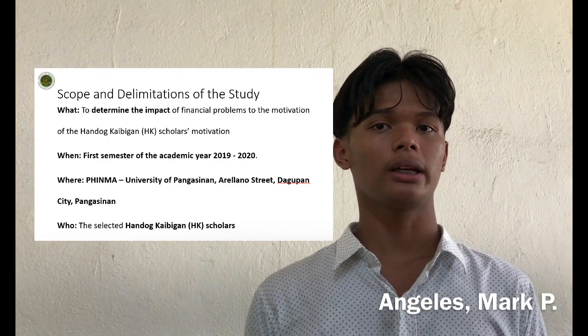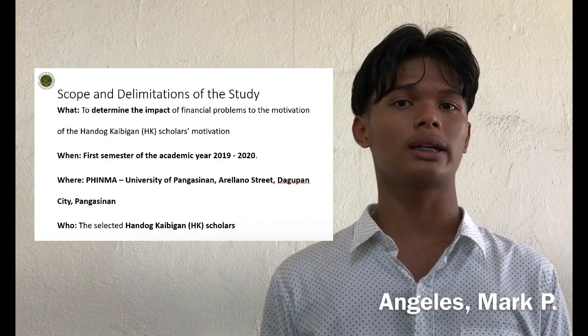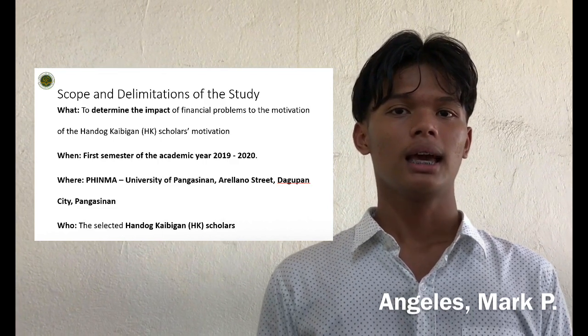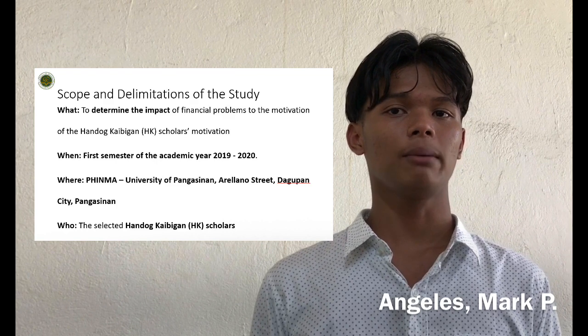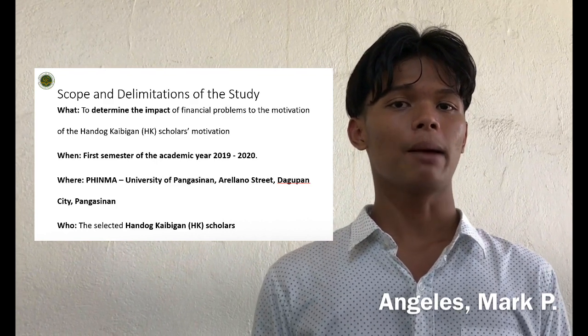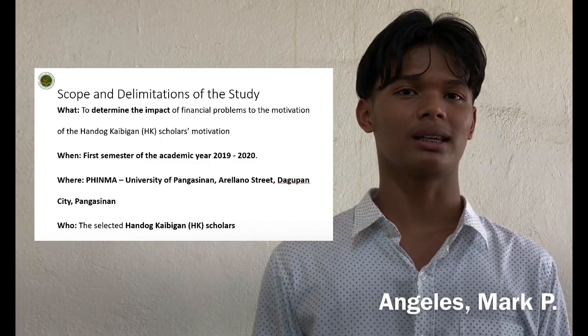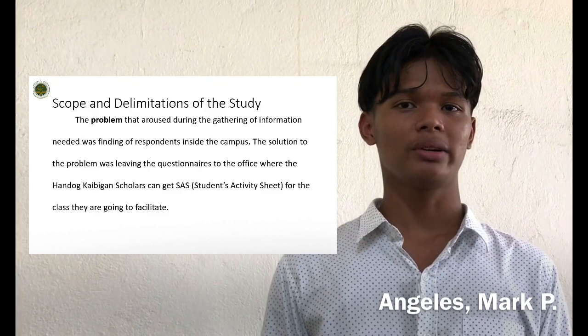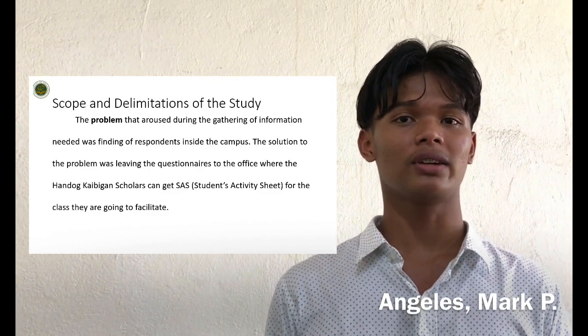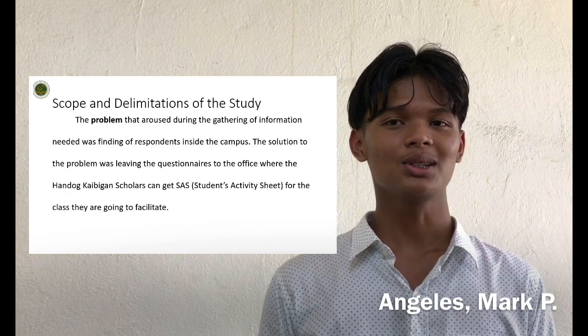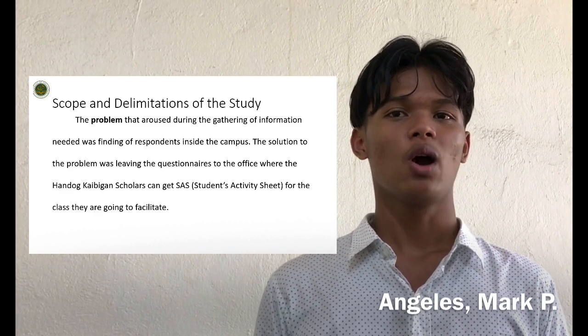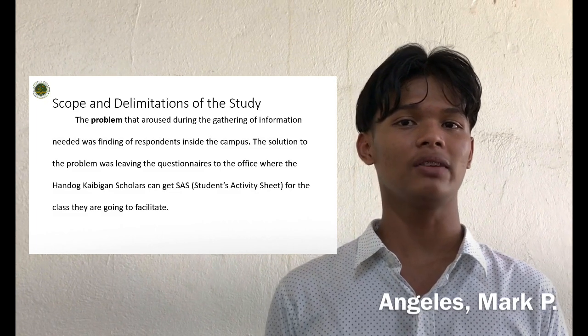The data gathered in the research was obtained from the selected Andolka Ibigan Scholars of FINMA University of Pangasinan. This study was conducted for the first semester of academic year 2019–2020. Random sampling was utilized, and the specific technique used in selecting the respondents was quota sampling. The problem that arose during data gathering was finding the respondents inside the campus. The solution was leaving the questionnaires at the office where scholars could collect them.